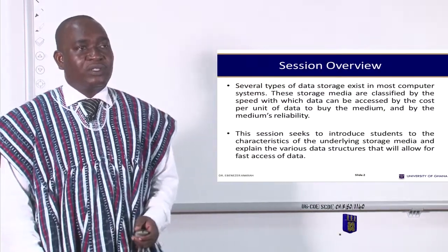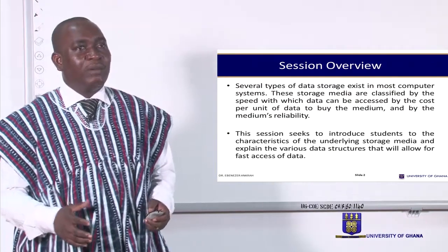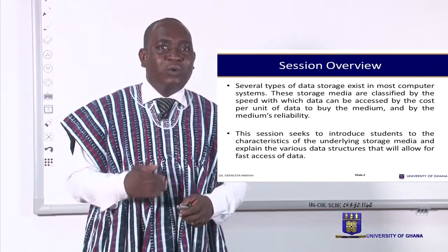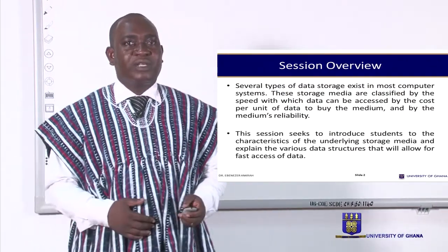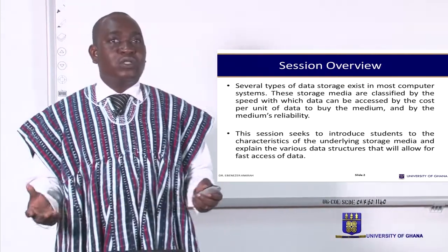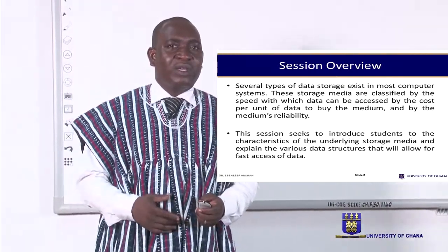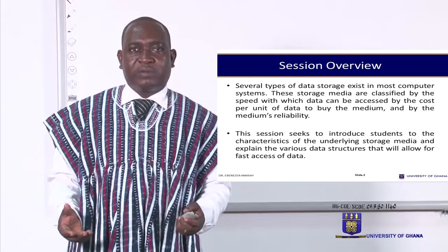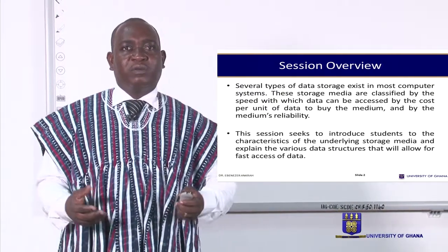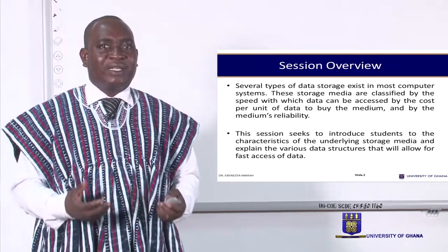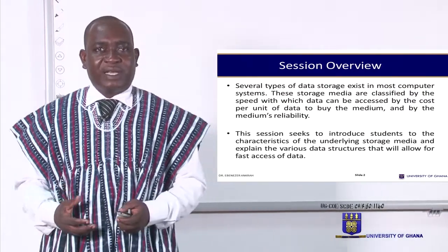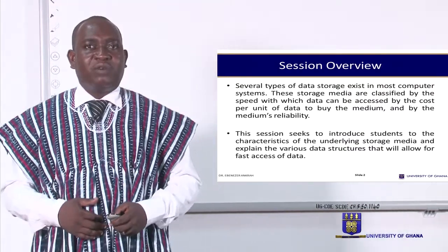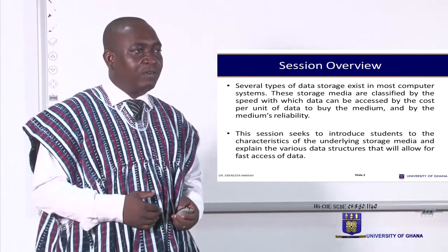When we're talking about storage and file structures, we are talking about the storage of data on different media, and also the way it is saved and stored. Several types of data storage exist in most computer systems. These storage media are classified by the speed with which data can be accessed, by the cost per unit of data, and we'll be looking at the characteristics that underline storage media, and also trying to explain the various data structures that will be used for fast access of data retrieval.